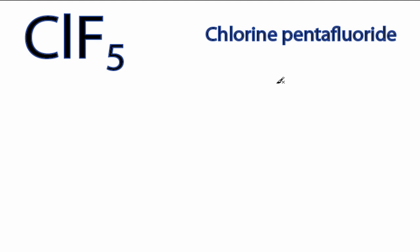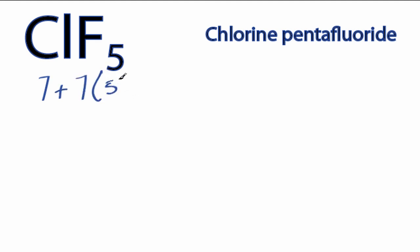This is Dr. B. Let's do the ClF5 Lewis structure. Chlorine has 7 valence electrons. Fluorine is in the same group and also has 7, but we have 5 fluorines. 7 plus 35 gives us 42 total valence electrons.